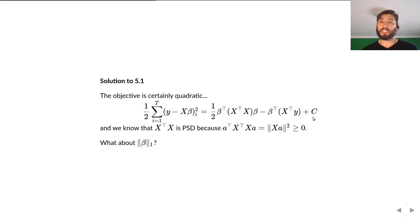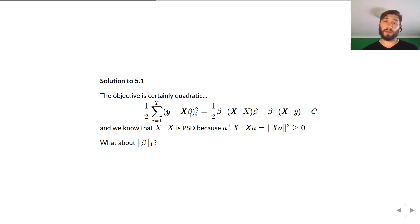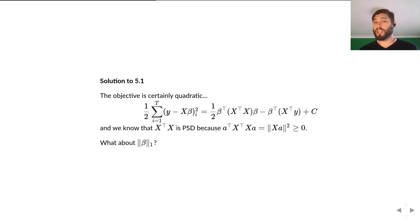Let's show that the lasso can be written in this form. The objective is quadratic: beta transpose X transpose X beta is the first part of the expansion of the 2-norm. We can write this as one-half of the 2-norm of Y minus X beta squared, expand using inner products, and get an objective with a quadratic term, a linear term beta transpose X transpose Y, and a constant C equal to the 2-norm of Y squared divided by 2.